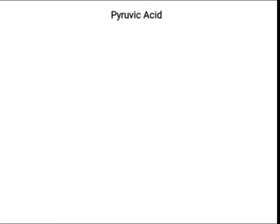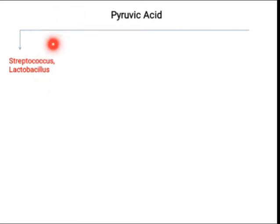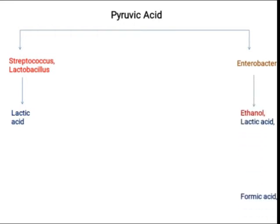If we talk about different bacteria and their different products in fermentation: we have pyruvate as the starting point. In the case of Streptococcus or Lactobacillus, this is basically lactic acid fermentation, producing lactic acid. In the case of Enterobacter, they can form ethanol, lactic acid, formic acid, butanediol, acetone, CO2, and hydrogen.